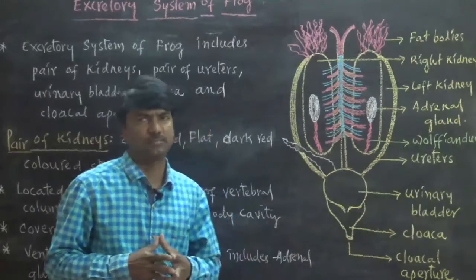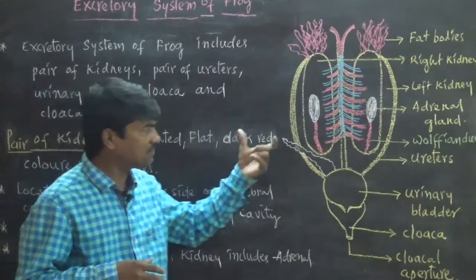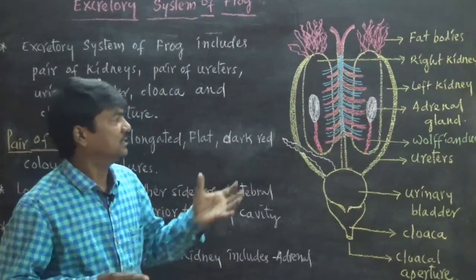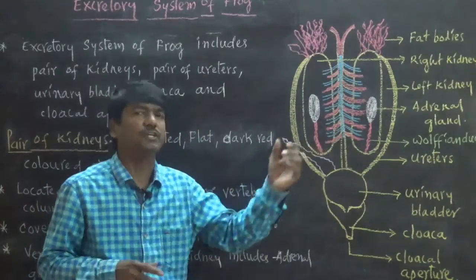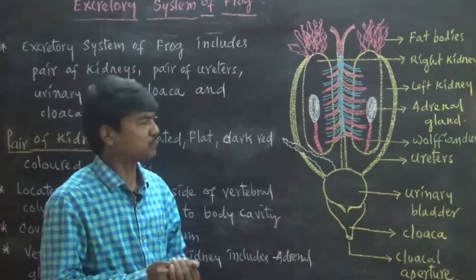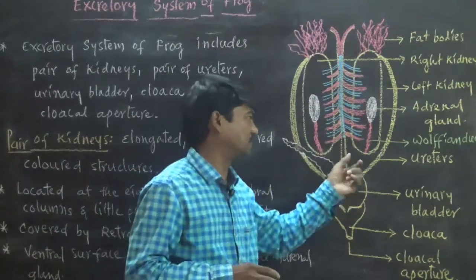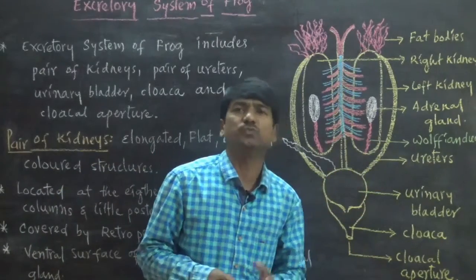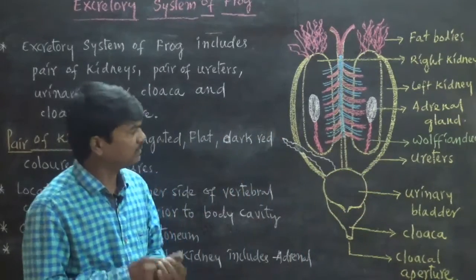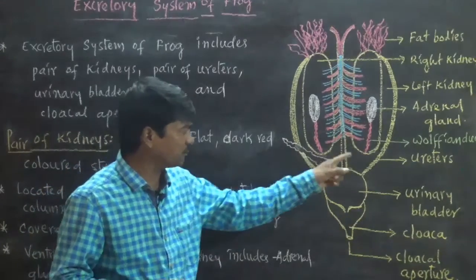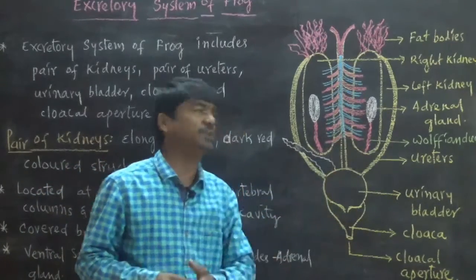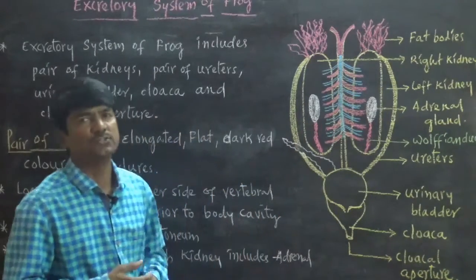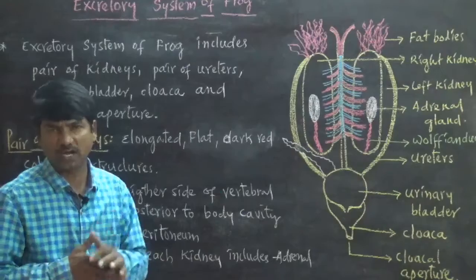Inside the kidney, mesonephric structures — also known as seminiferous tubules — are present. These are the basic units, the nephrons, of the excretory system of frog. In the posterior part of each kidney, a specific duct called the Wolffian duct arises and connects to the adrenal gland. On the ventral surface of each kidney, one pair of adrenal glands is present, which generally produce various hormones.